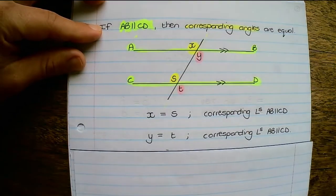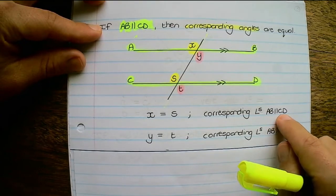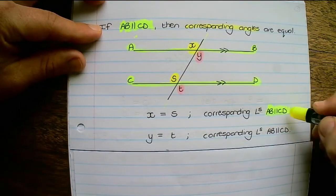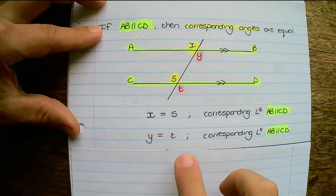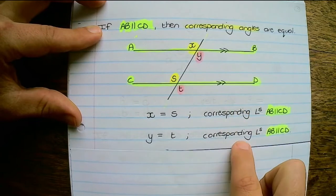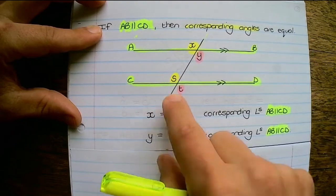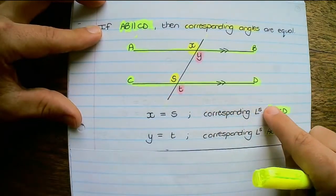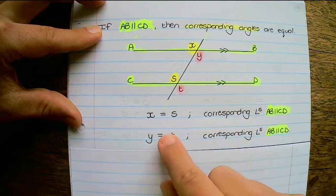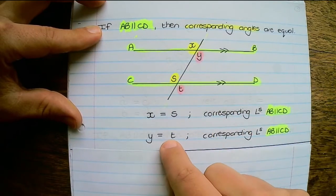Notice the reason: it says 'corresponding angles', and it's important to state that you are making use of the parallel lines — so you must say 'AB is parallel to CD'. Even though we're using the same reason and same properties, we write the reason twice because we are referring to different angles. X equals S uses corresponding angles, and Y equals T also uses corresponding angles — same reason, but different angles.